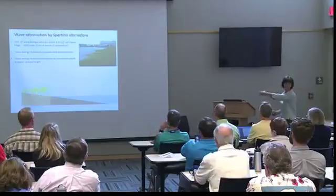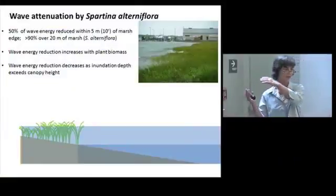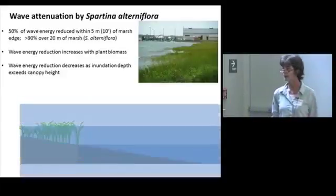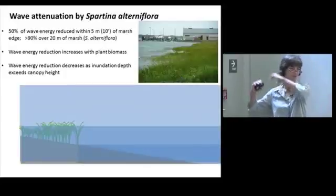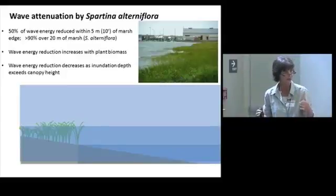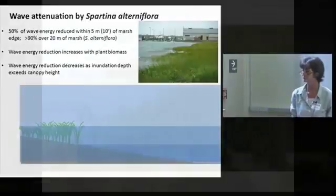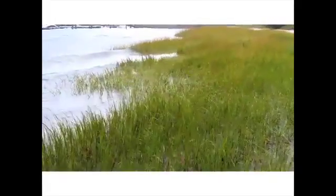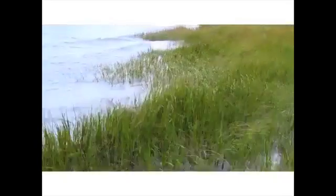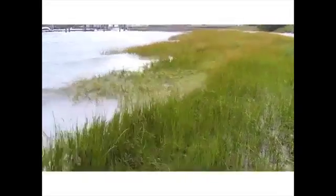When storm surge water levels reach double the plant canopy height, the marsh is no longer effectively attenuating wave energy — it becomes a drag coefficient as surge moves across. A video of waves hitting a living shoreline on Pyrobras Island shows plants flattening in the foreground while those behind remain erect, absorbing energy and reducing what hits the shoreline behind.